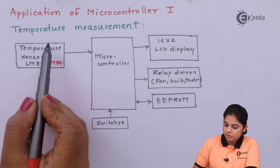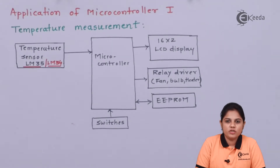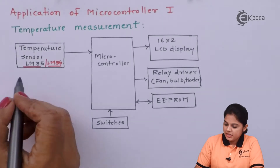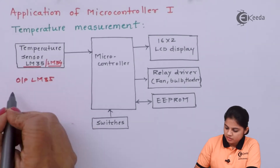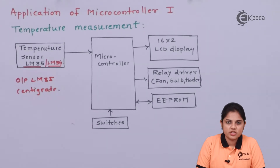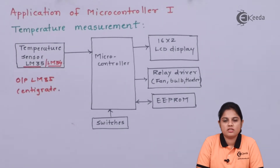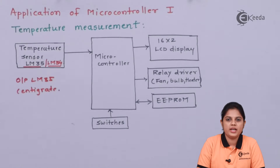To measure the temperature, first we need a temperature sensor. LM35 is the most widely used sensor to sense the temperature of a particular environment or room. The output of LM35 is directly proportional to the centigrade value of temperature. The LM35 sensor has to be placed in that particular room, which will continuously measure the temperature and send that physical quantity to the microcontroller.